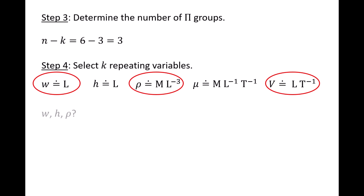One example of a set of variables that cannot be used as the repeating variables is w, h, and rho, and there are two reasons for this. First, it's possible to make a dimensionless group from these variables: w over h. Second, notice that the dimension of time does not appear in w, h, or rho.